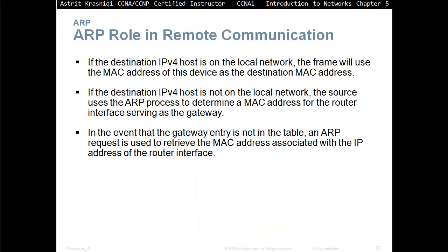ARP role in remote communication. If the destination IPv4 host is on the local network, the frame will use that device's MAC address as the destination MAC address. If the destination host is not on the local network, the source uses the ARP process to determine the MAC address of the router interface serving as the gateway. If the gateway entry is not in the table, an ARP request is used to retrieve the MAC address associated with the IP address of the router interface.